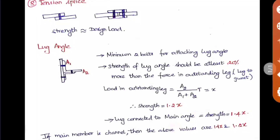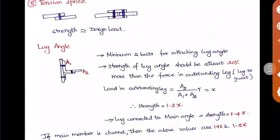The same thing is called a tension splice. We use cover plates for joining in butt joints, and that cover plate can be called a splice or splice plate. This is what they call a splice plate and tension splice. I have drawn a diagram here to show the lap joint and butt joint.